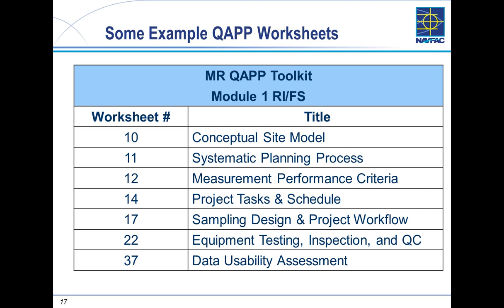The toolkit includes worksheets that you'll need to modify for site-specific needs since not every range used the same munitions or has the same fragmentation distances. It has good starting-point examples for your conceptual site model, systematic planning process, measurement performance criteria, task and schedule, sample design and workflow, equipment QC requirements, and whether the data is usable for the decisions you need to make at the site.